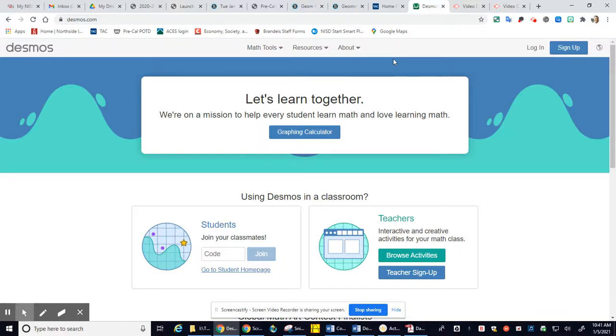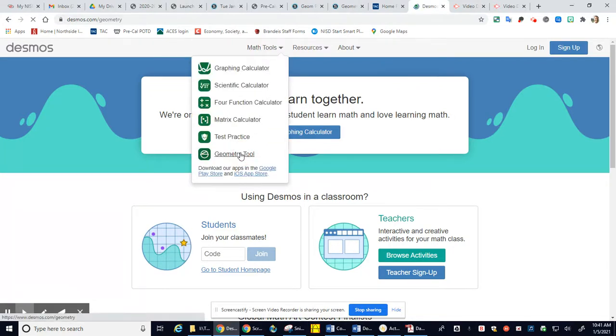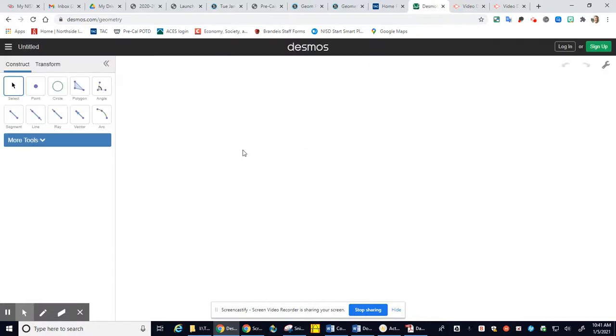Okay, in this video we're going to be at desmos.com once again, using their geometry tool. In this case, we're doing a rotation. I'm going to turn the grid on so I can see the grid there.